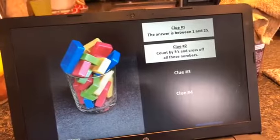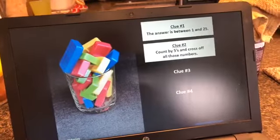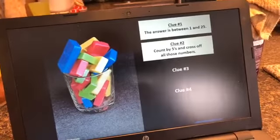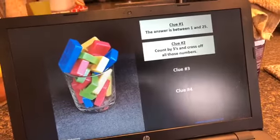You're going to count by 5 and cross off all of those numbers. Again, between 1 and 25, and you count by 5, cross off all those numbers.